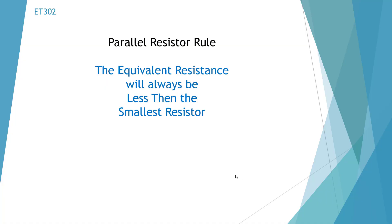Okay, there's a simple parallel resistor rule that the equivalent resistance will always be less than the smallest resistor. So this could be used as a check. If you calculate it, it should be smaller than the smallest resistor. This is also helpful on multiple choice tests including the FCC exams. It'll save you some time. So the equivalent resistance will always be less than the smallest resistor.